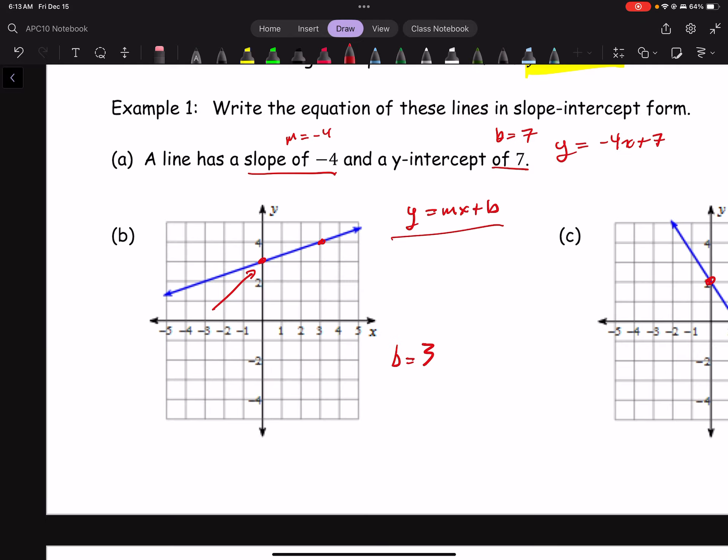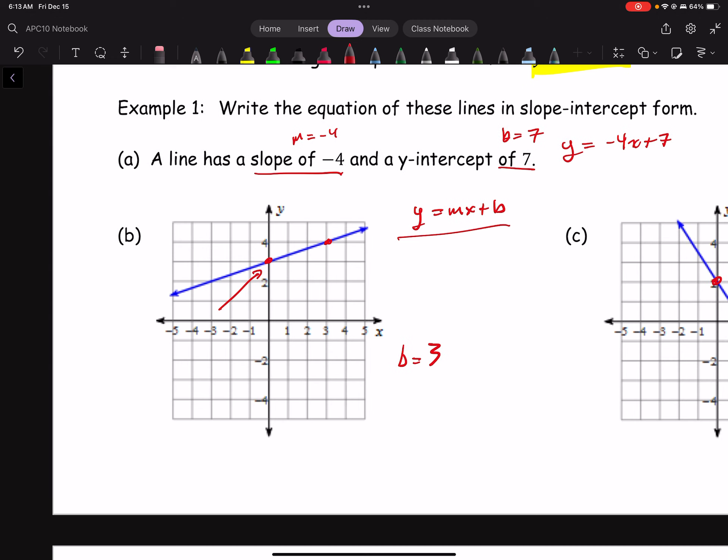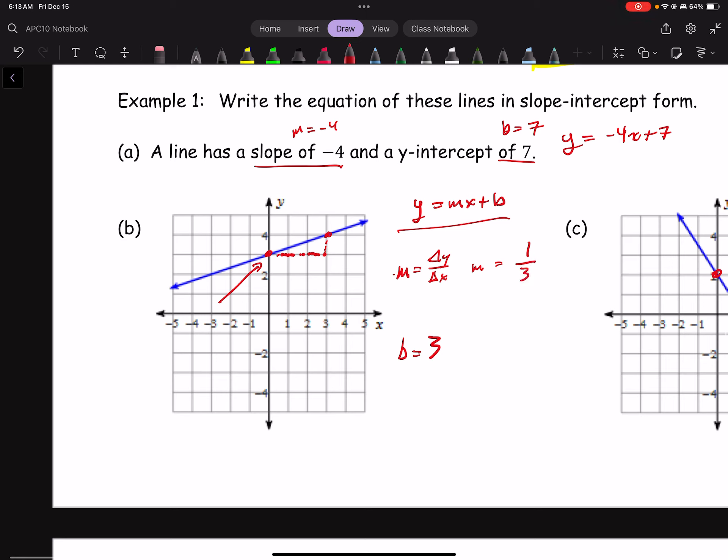Now what I have done is put two points on my graph just to get a gauge of the slope. And what I'm able to see, the slope is delta y over delta x, or rise over run. And the slope here looks like the y changes by 1, the run changes by 3. Slope is 1 third. So the equation in slope-intercept form is y equals 1 third x plus 3.